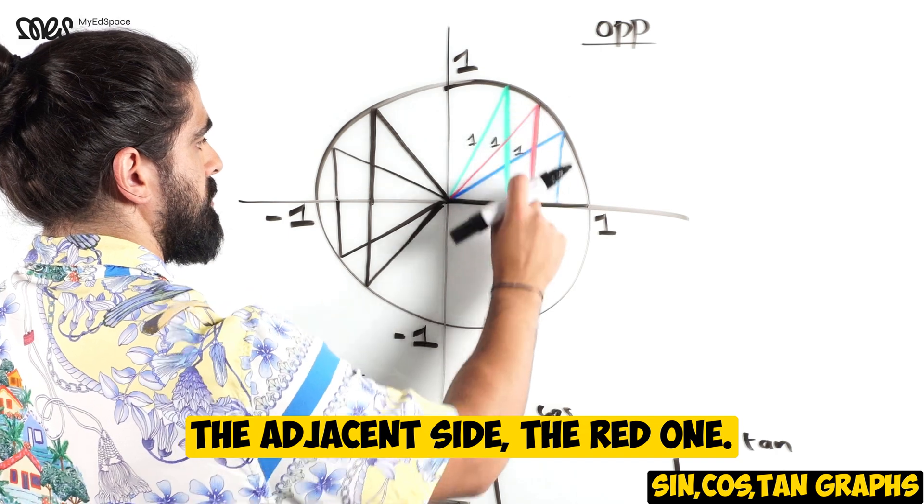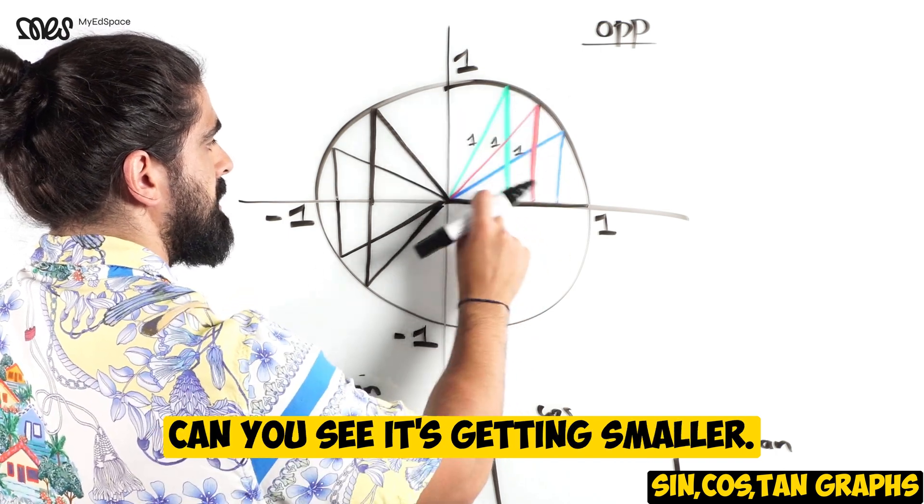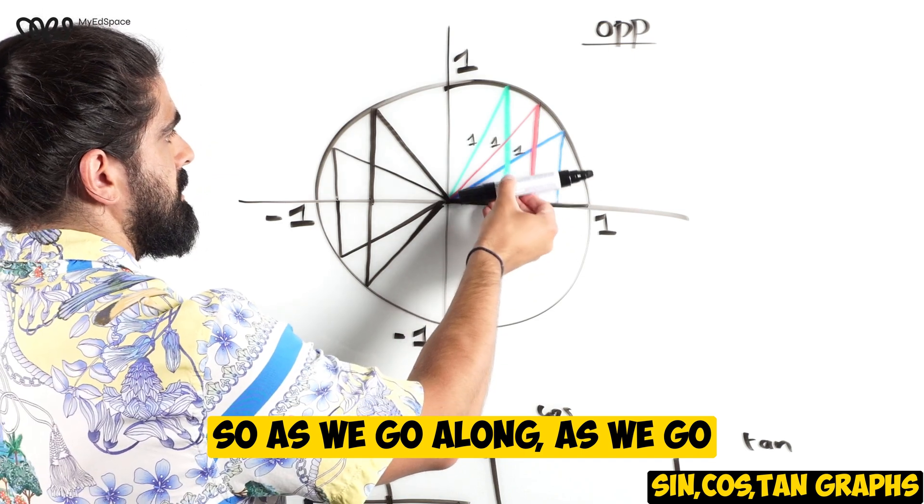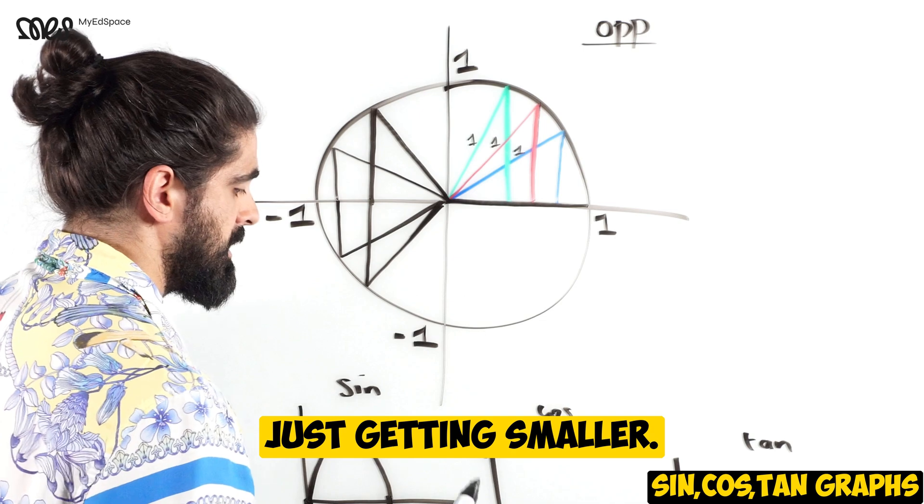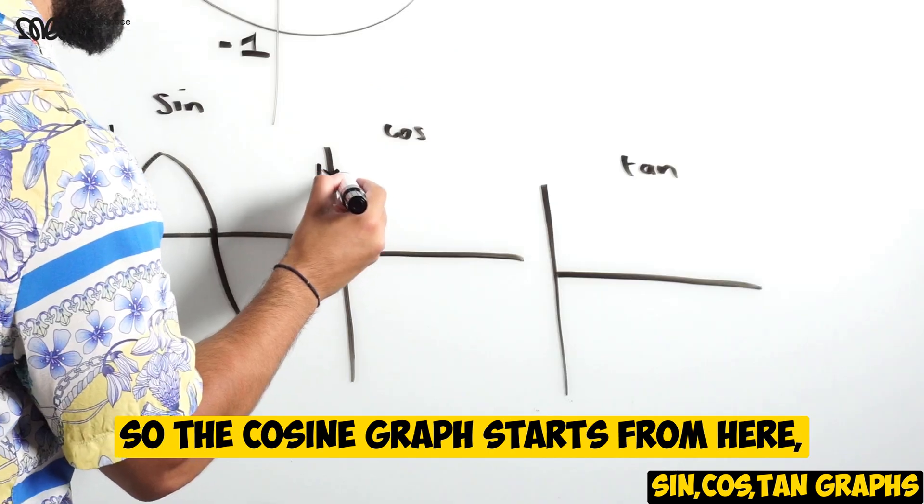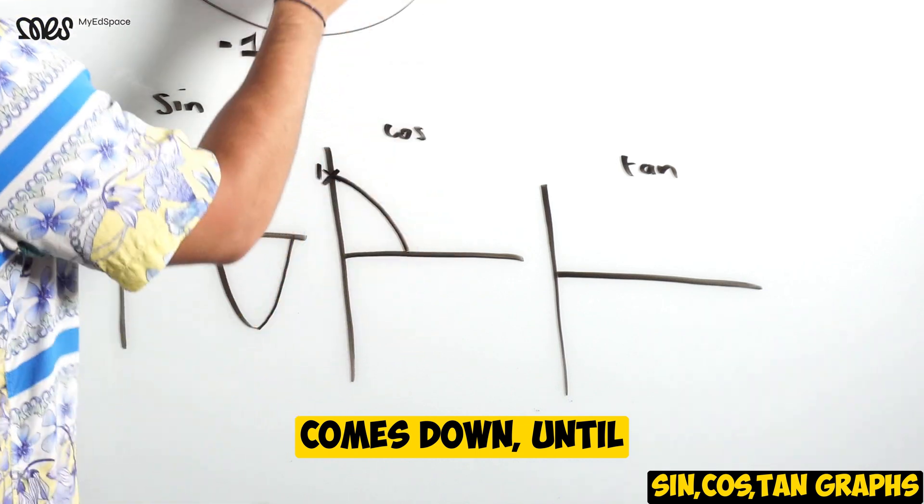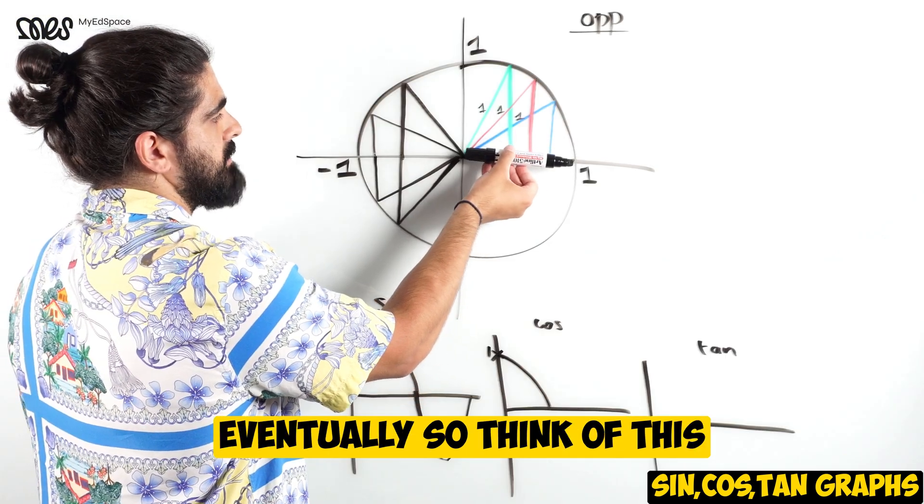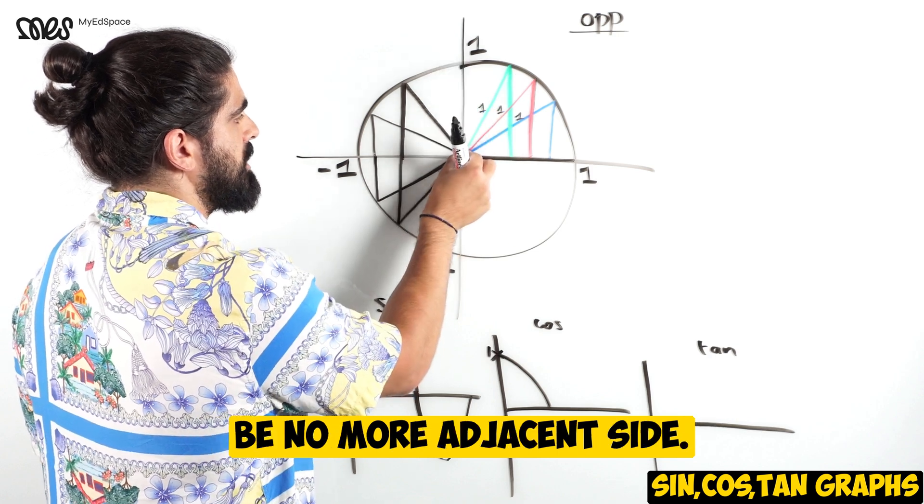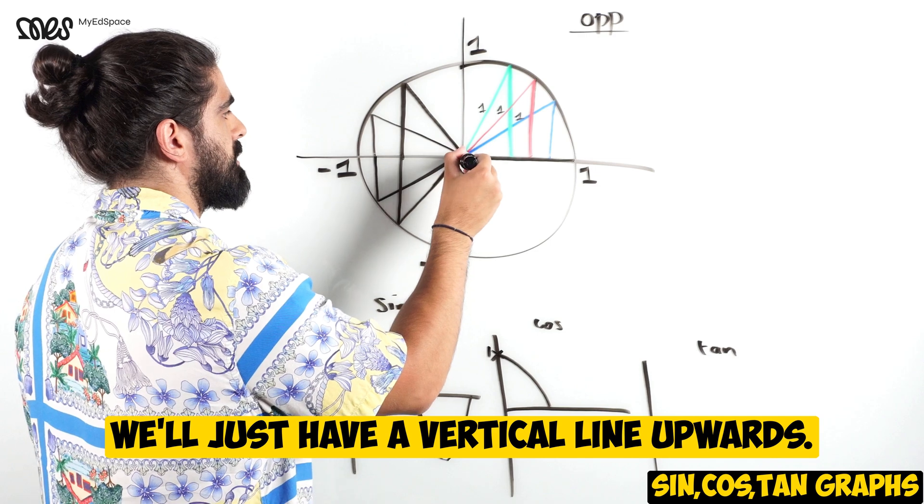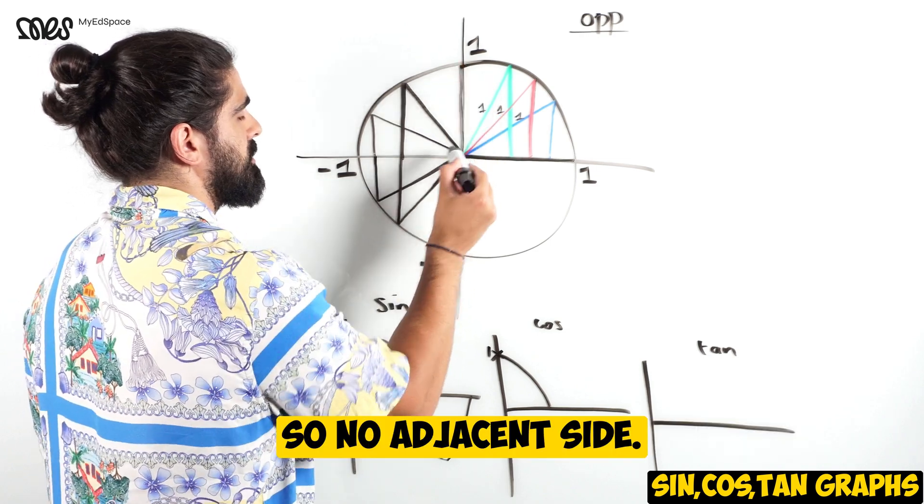Look at my triangles, look at the adjacent side. It's getting smaller. So as we go along, the adjacent side is getting smaller. The cosine graph starts from here, comes down, until eventually there'll be no more adjacent side - we'll just have a vertical line upwards.